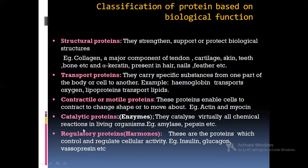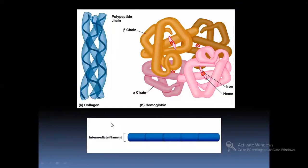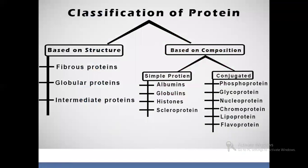The last classification is based on composition. Based on composition, there are two classes: simple proteins and conjugated proteins. You are requested to go through this and make notes, noting the key points and examples for each class.